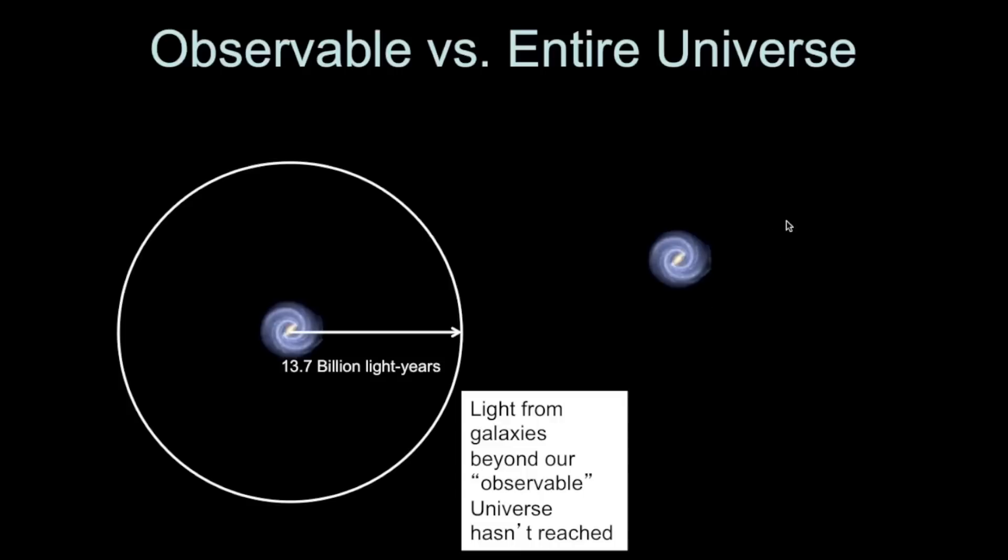this other galaxy that is outside of our observable universe would have its own radius around it, its own observable universe of 13.7 billion light years. If our observable universe and their observable universe do not intersect, at this current moment, we would not be able to see each other.